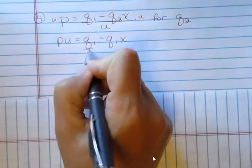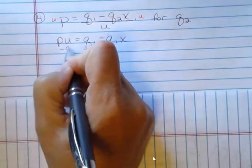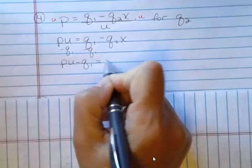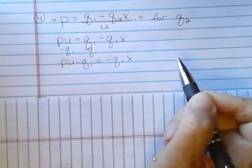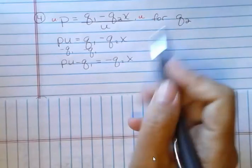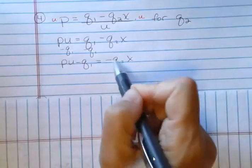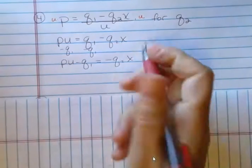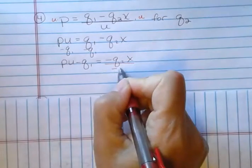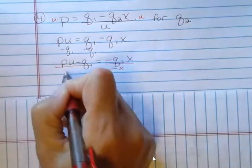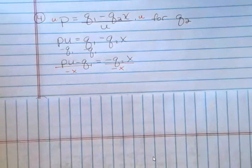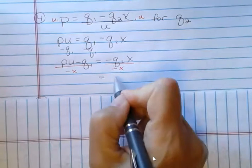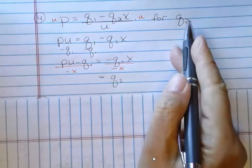And I'm solving for q sub 2. So I'm going to get rid of that q sub 1. And I want to solve for q sub 2, and I don't want to have a negative in there. So I'm going to divide both sides now by negative x. And when I divide by negative x over here, the negatives go and the x goes, and I get q sub 2, which is what I wanted to solve for.